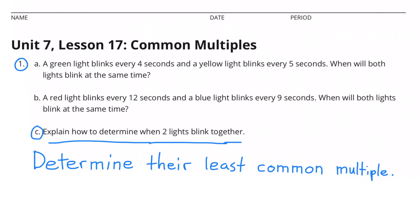C. Explain how to determine when two lights will blink together. Well, to figure out when two lights would blink together, you determine what their least common multiple is.